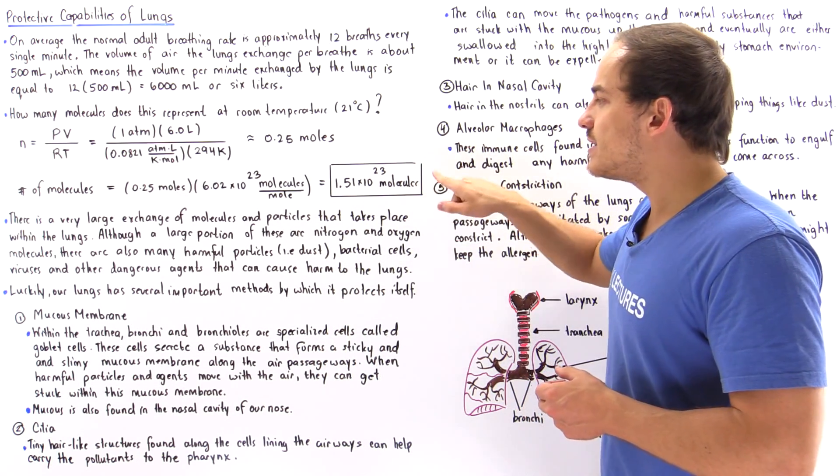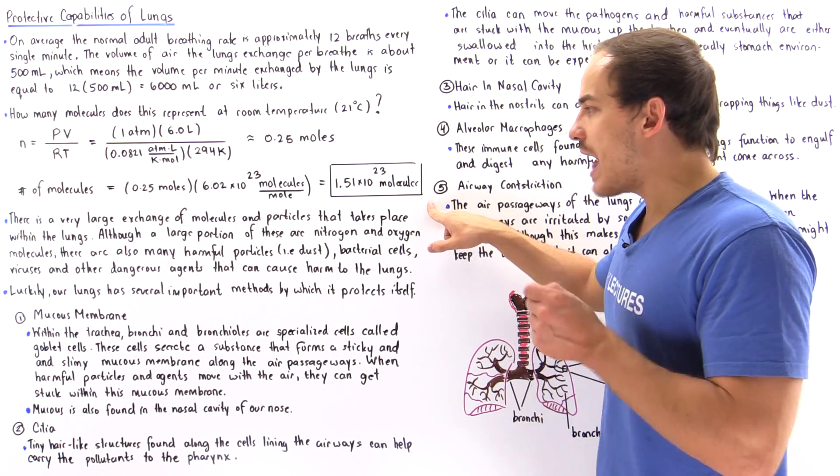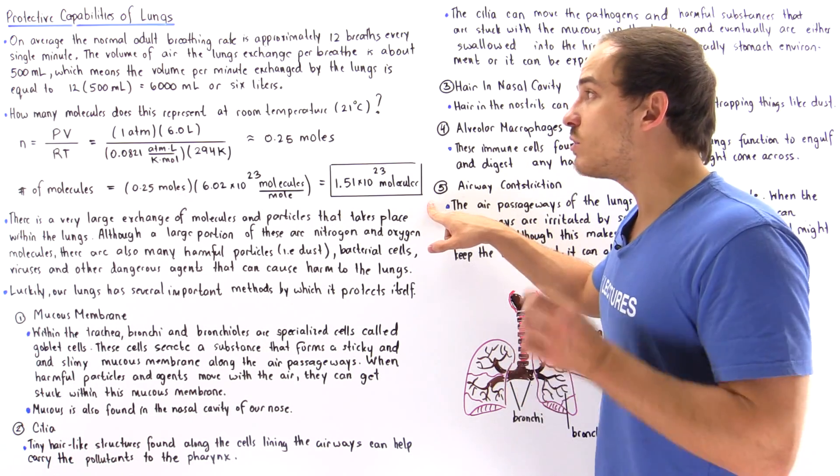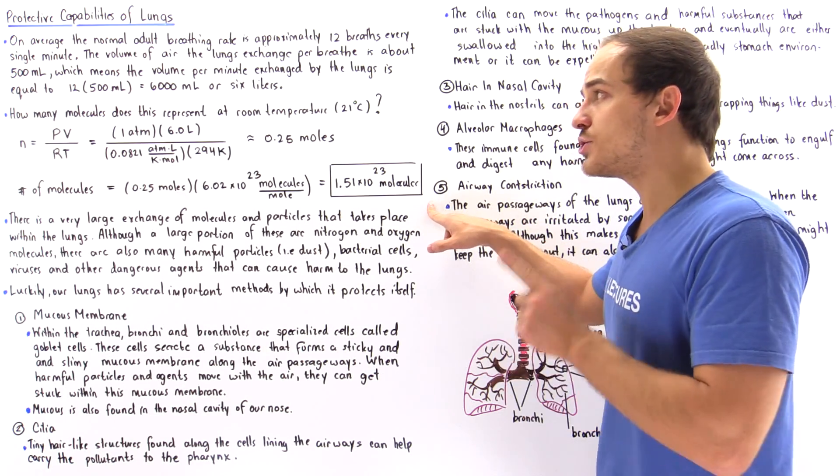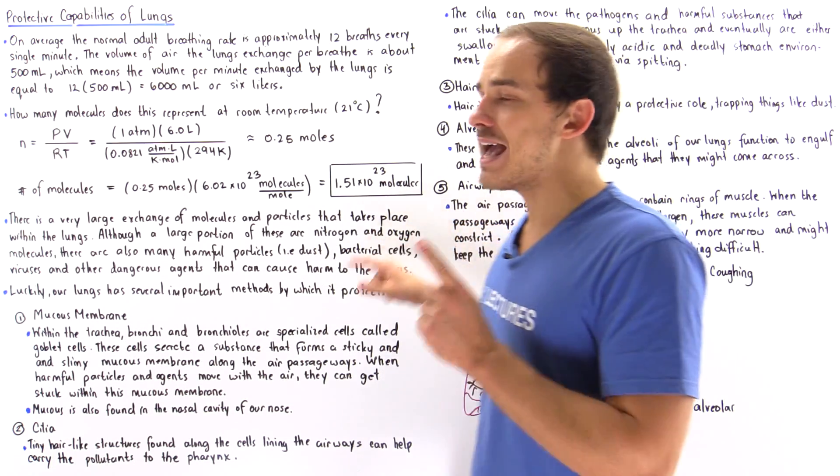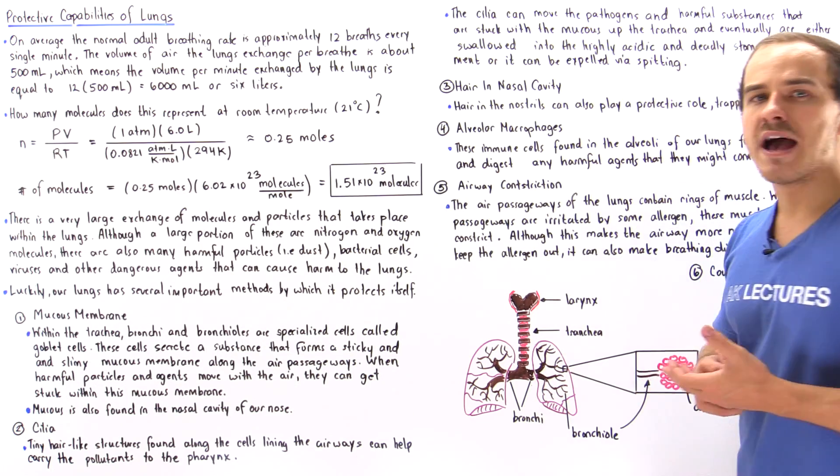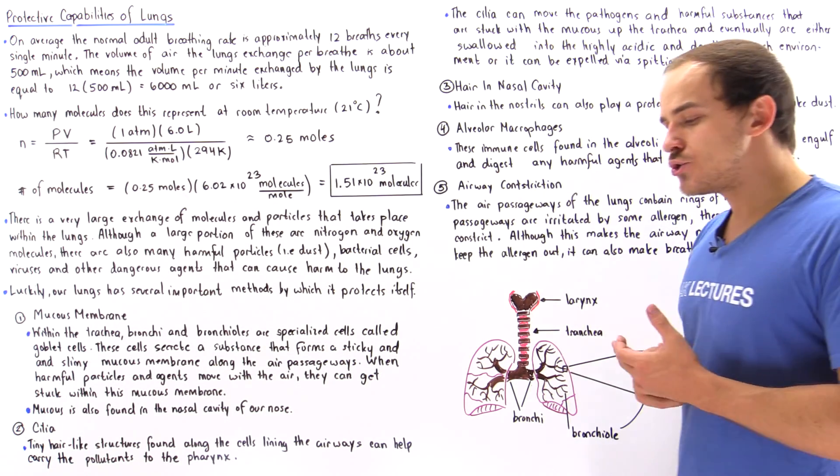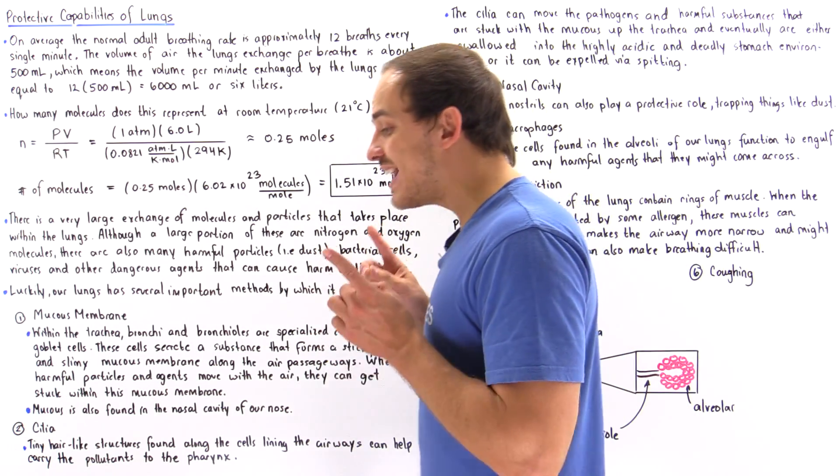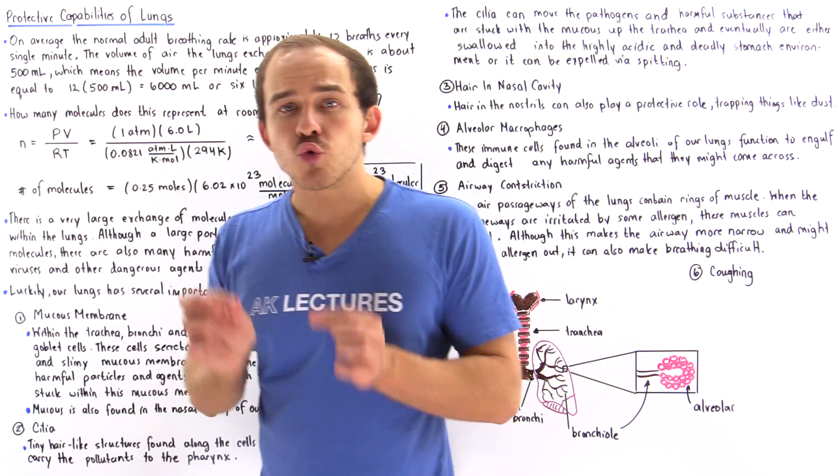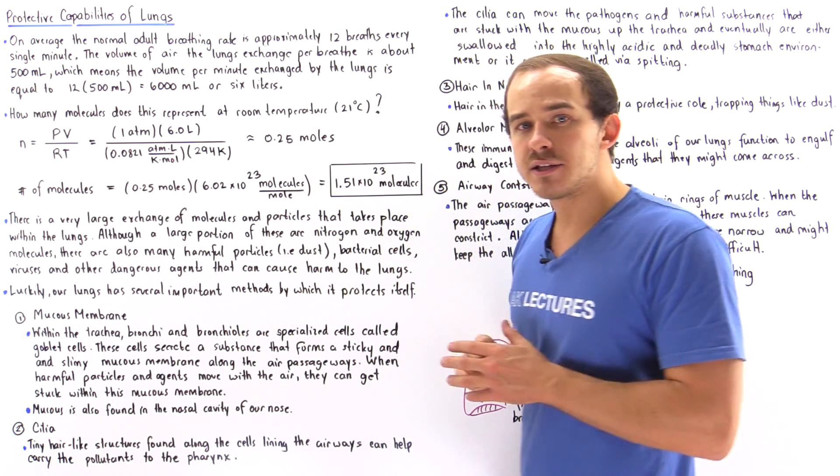This is the number of molecules that are exchanged by our lungs every single minute, assuming that the individual is at rest. Now, what's the point of calculating this value? It was basically to show you that our lungs are capable of exchanging a great number of different molecules.